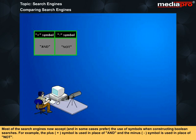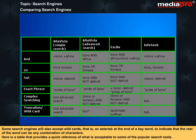Most of the search engines now accept, and in some cases prefer, the use of symbols when constructing Boolean searches. For example, the plus symbol is used in place of AND and the minus symbol is used in place of NOT. Some search engines will also accept wildcards, that is, an asterisk at the end of a keyword to indicate that the rest of the word can be any combination of characters.